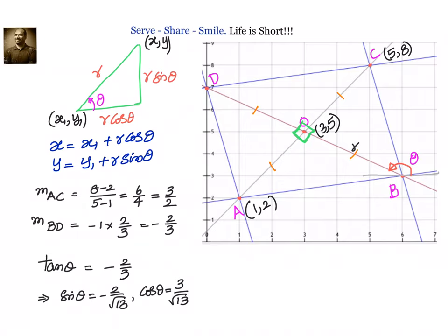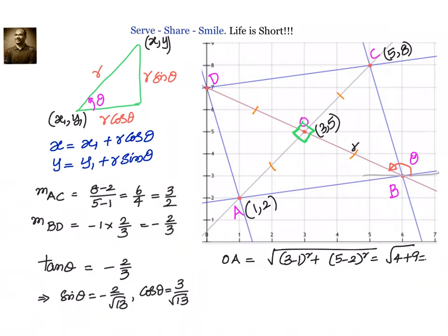OA = √[(x2-x1)² + (y2-y1)²] = √[(3-1)² + (5-2)²] = √[4 + 9] = √13. So r = √13. Now we know r and we know the point (3, 5), so we should be able to easily find the coordinates of B.